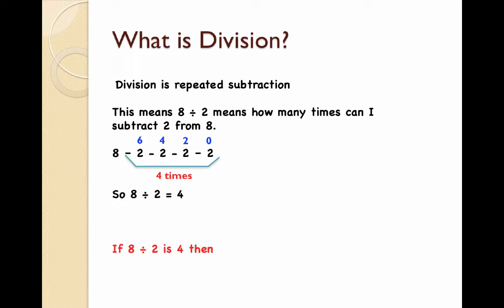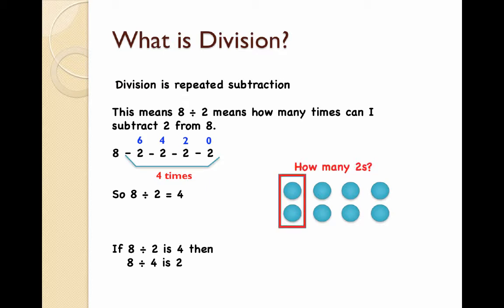So if 8 divided by 2 is 4, then 8 divided by 4 is 2. And we're going to have a look at that in a diagram here. I have 8 dots here and I want to know how many groups of 2 are in there. So I count them: 1, 2, 3, 4. 4 groups of 2. That's 8 divided by 2.